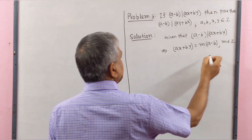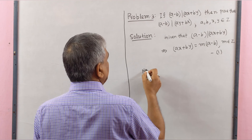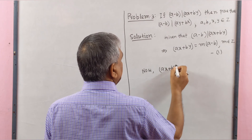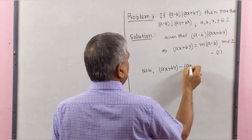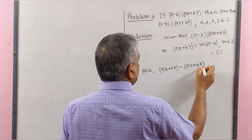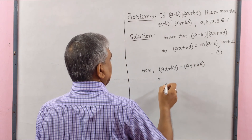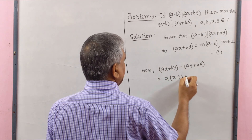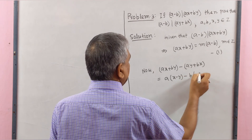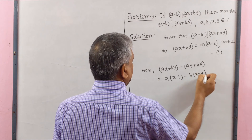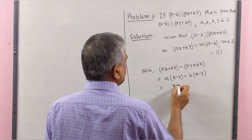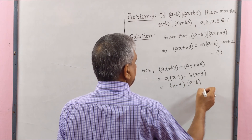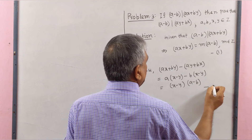Now, AX plus BY minus (AY plus BX) equals A common (X minus Y) minus B common (X minus Y), which equals (X minus Y)(A minus B). This is equation number 2.